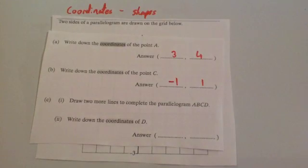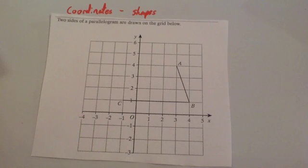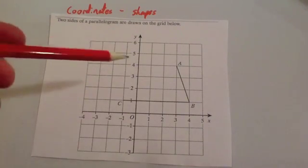It then says draw two more lines to complete the parallelogram ABCD. So remember for the parallelogram, the opposite lines are the same length, but also the same direction.